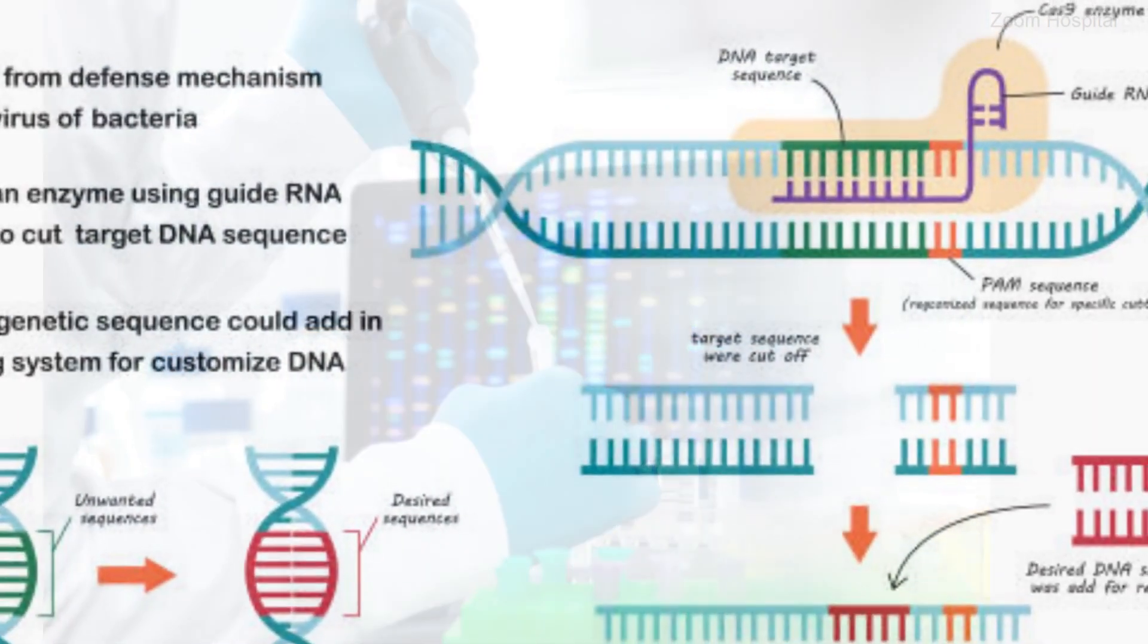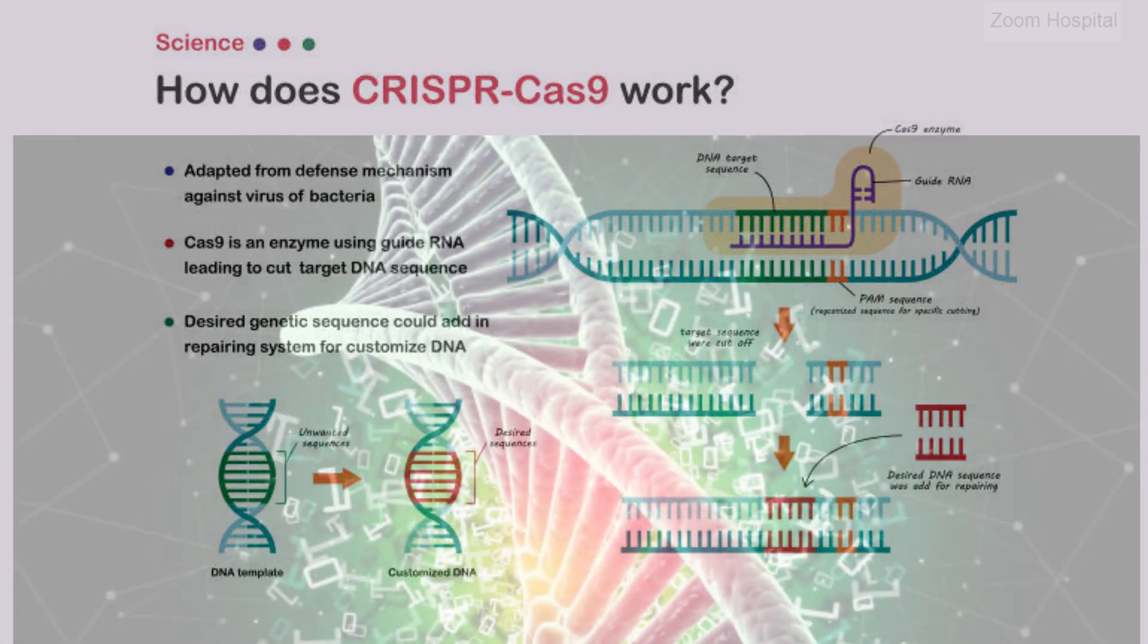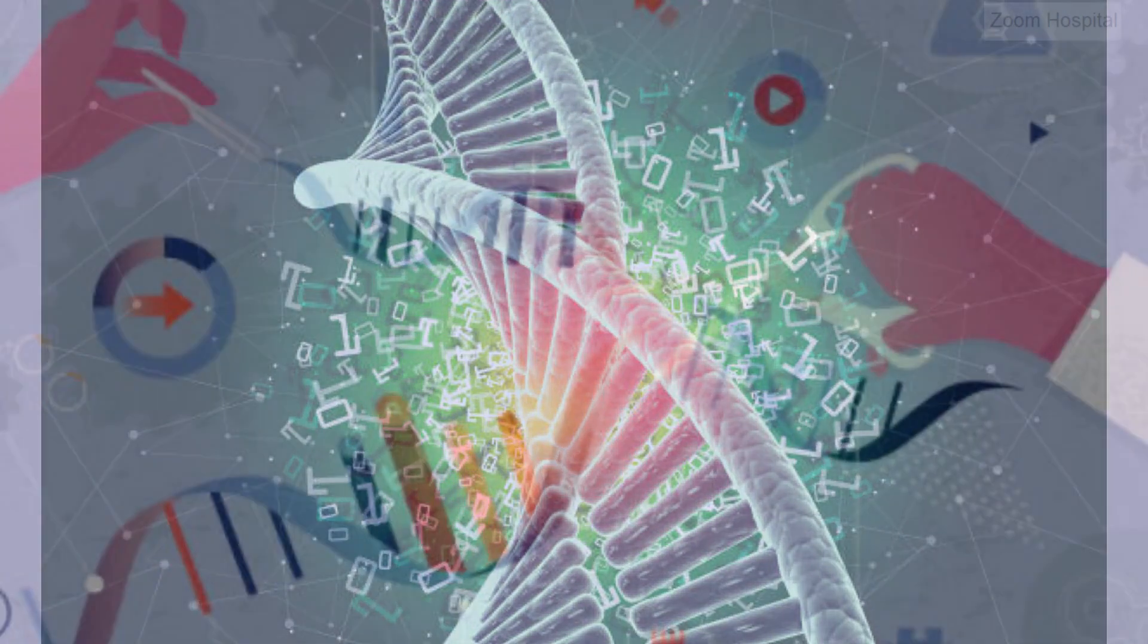CRISPR is the short form of clustered regularly interspaced short palindromic repeats, which refers to a natural defense mechanism found in bacteria, and it protects against invading viruses.